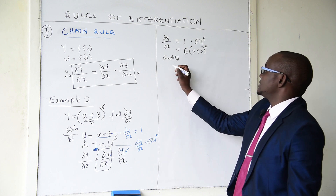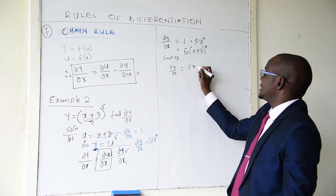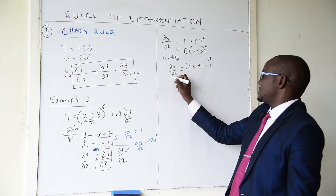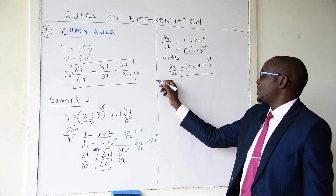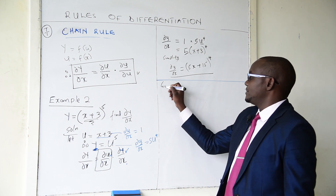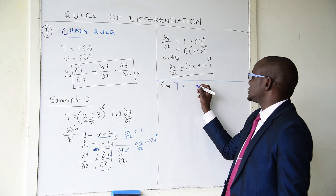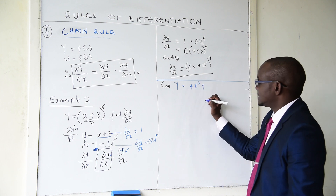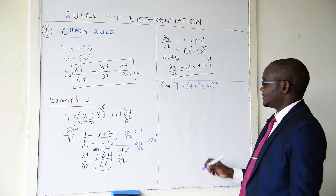When you simplify further, dy/dx equals 5 multiplied by x plus 5 multiplied by 3, giving 5x plus 15, raised to the power 4. Let's do another example. Given y equals (4x cubed plus 20) to the power 10, find dy/dx.